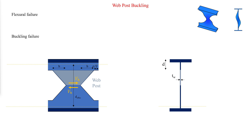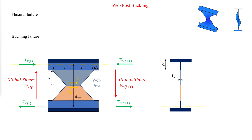Separate checks are made for the top and bottom Ts, which may have different thicknesses and available strengths. For castellated beams, the buckling capacity of the web post is calculated using equations developed through destructive testing. This set of equations defines the buckling capacity of the web post as a percentage of its plastic bending moment Mp, which is a function of E, B, tw, and Fy. The buckling capacity as a percentage of Mp is a function of 2H divided by E. The destructive testing was completed for beams with a hexagonal cut angle of 45 degrees and 60 degrees.